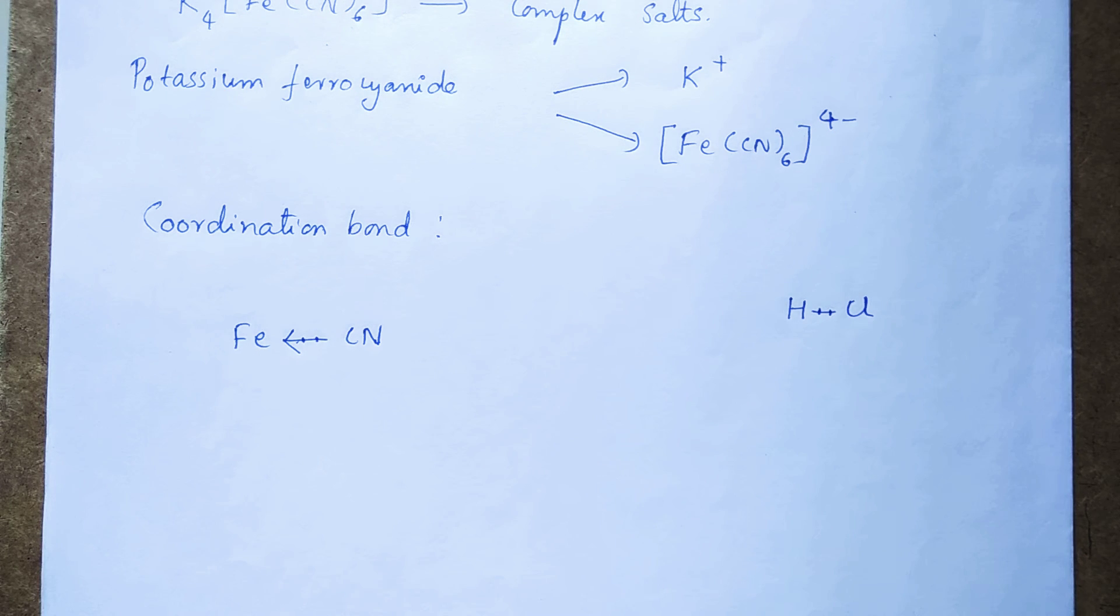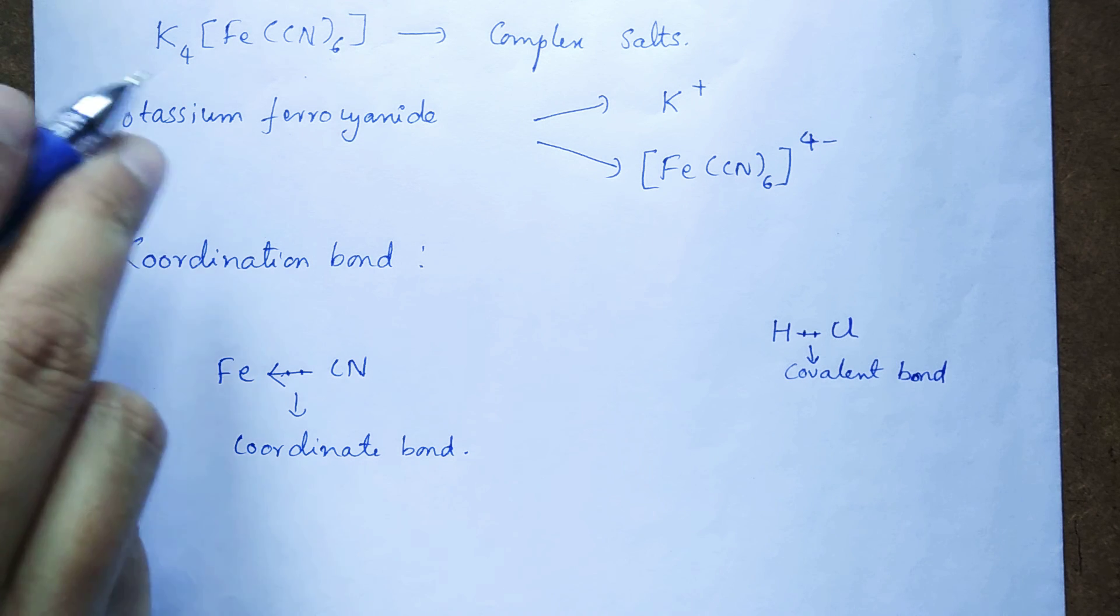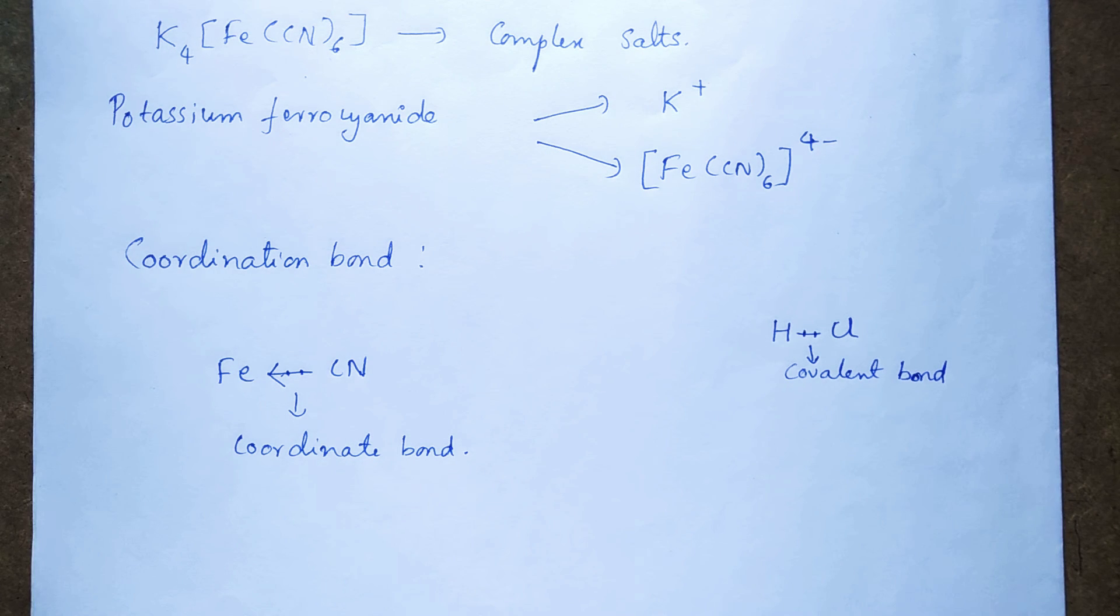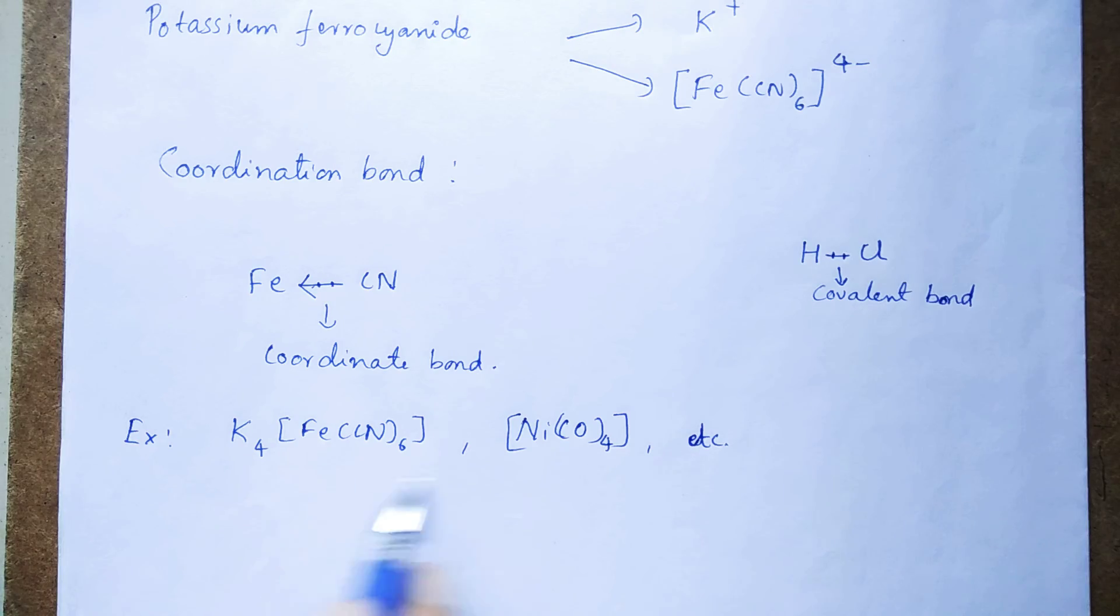I hope you got the difference between coordination bond and covalent bond. So the compounds which contain such coordinate bonds are studied as coordination compounds. These are some commonly used coordination compounds. This is potassium ferrocyanide and this is another familiar coordination compound, nickel tetracarbonyl.